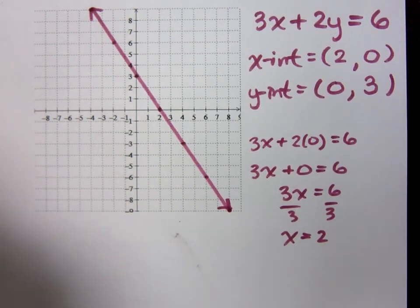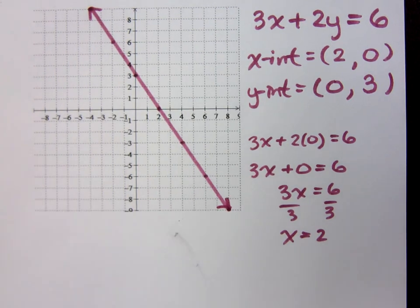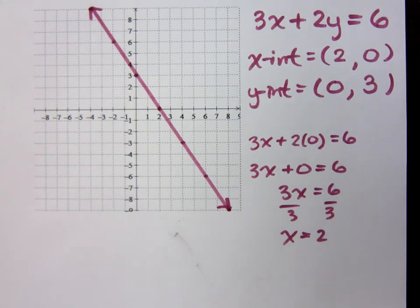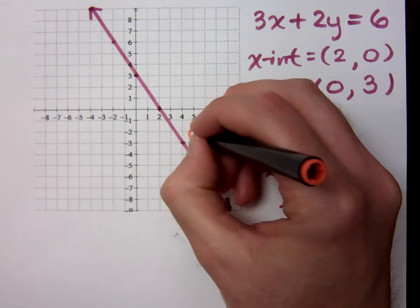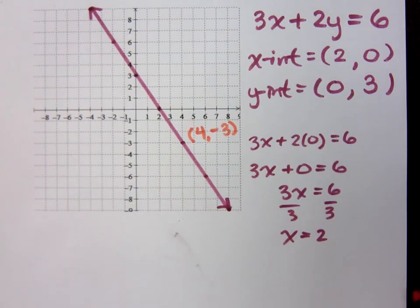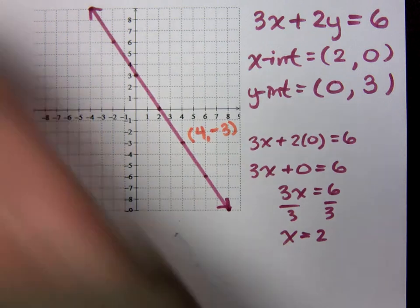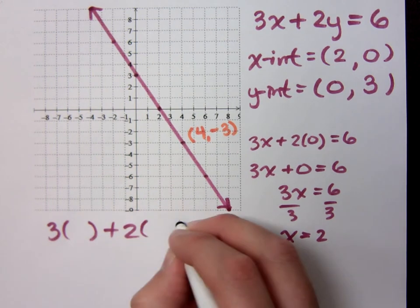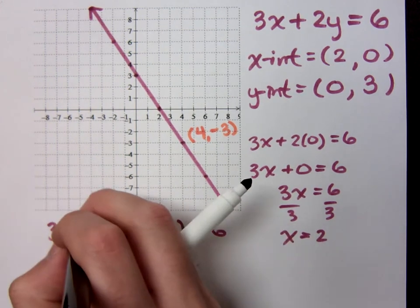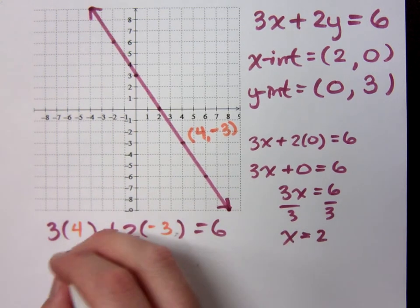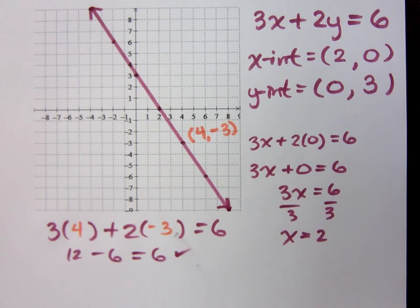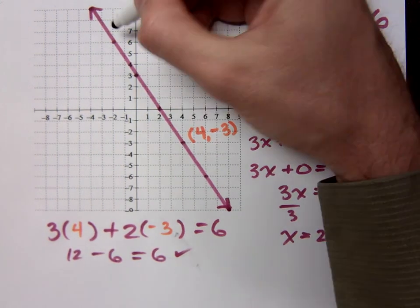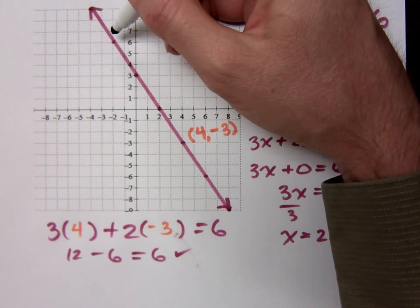Here's how you know what you have is correct: pick off some points that you didn't use to graph. We used these points, so pick something else. I see this point right here is the ordered pair (4, negative 3). That should work if I plug it back into the original — 3X plus 2Y equals 6. If I plug in 4 and negative 3: I get 12 minus 6, which does equal 6. I could pick another point up here and test it as well. Do that to make sure what you have is correct.